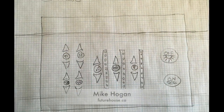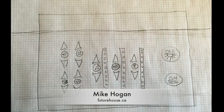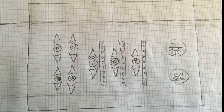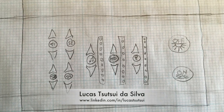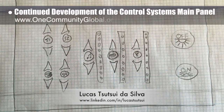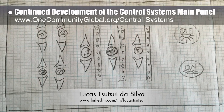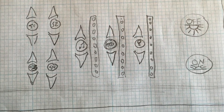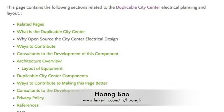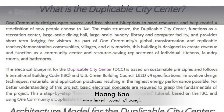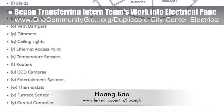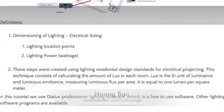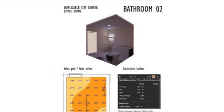Behind the scenes, Mike Hogan, automation systems developer and business systems consultant, and Lucas Tasui De Silva, fourth-year computer engineering student, continued development of the control system's main panel. This week's focus was further evolving their designs into what they think will be their final design. Wang Bao, software developer, also began transferring the work of last year's intern team into the new duplicable city center electrical page. What you see here is the first third of the complete content live on the new page.